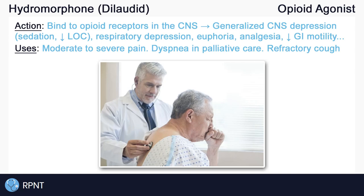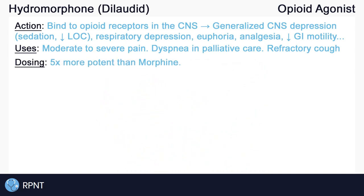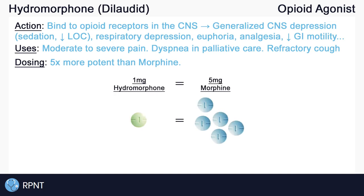Be aware that hydromorphone is approximately five times more potent, or five times stronger, than morphine. For example, one milligram of hydromorphone is equivalent to about five milligrams of morphine. So keep that in mind, especially when switching from one drug to another. When given subcutaneously or intravenously, hydromorphone is approximately twice as strong as it would be when given orally.